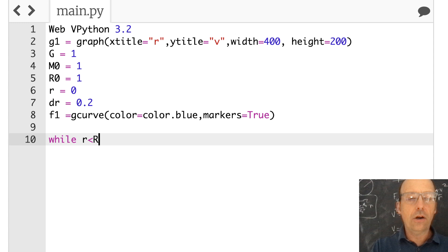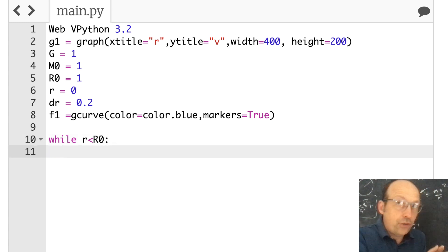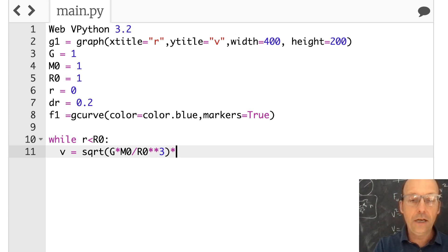While r is less than r0. Because, remember, I have two functions. So I'm going to actually plot two loops. I'm going to first go from r to r0, and then I'm going to use that function. Then after that I'll go to r or something like that. So let's just calculate v. V_in is going to be the square root of G times m0 divided by r0³, which they're all ones, it doesn't really matter, times r. And I'm going to plot that, f1.plot, r, v. And then I'm going to increase my value of r. r equals r plus dr.